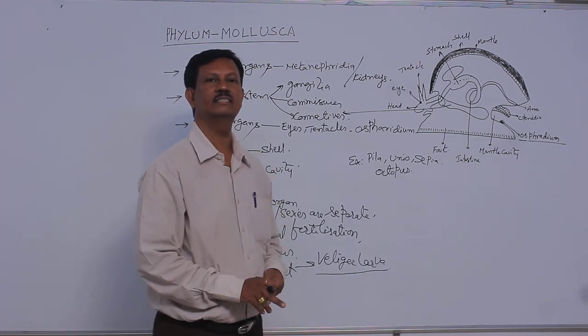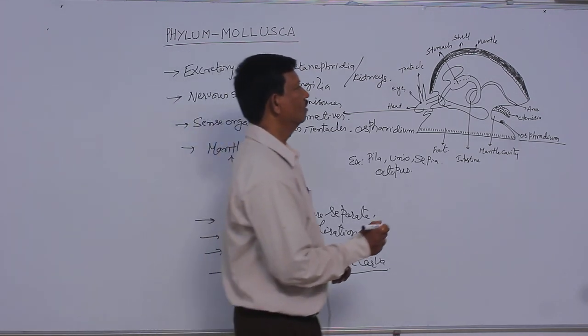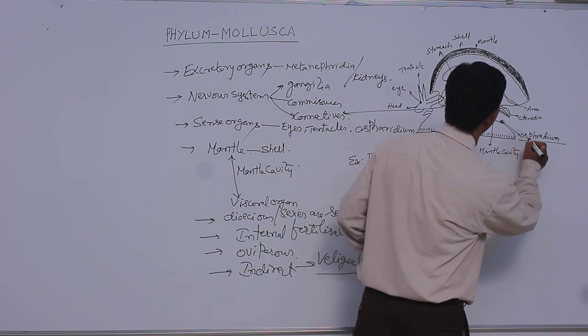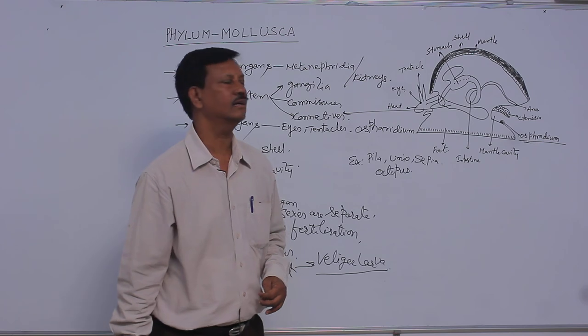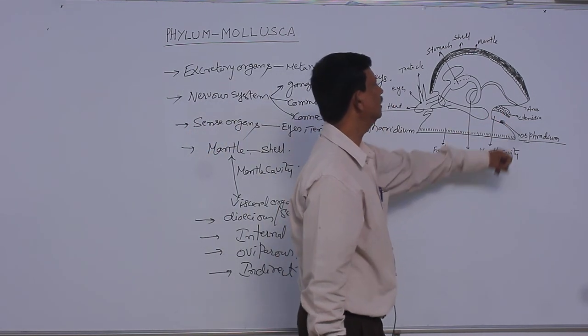Sense organs are eyes, tentacles, and osperidium also present in the body. These are mostly aquatic animals. That is why gills or ctenidial leaf-like structures are present. They help in the respiration. These are the main characters of the phylum mollusca.